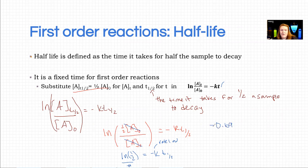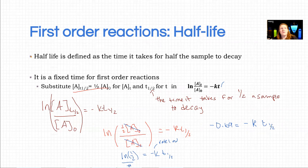So all I did was go ln of one-half and you get negative 0.69 equals negative k from the graph times the half-life. So if you have a graph of the reaction you can plug this in and you know that it's first order. This only works for first order, but you just plug in the k and you can find the half-life.